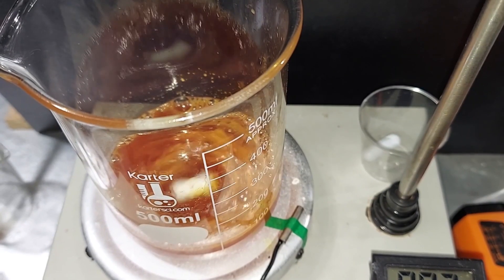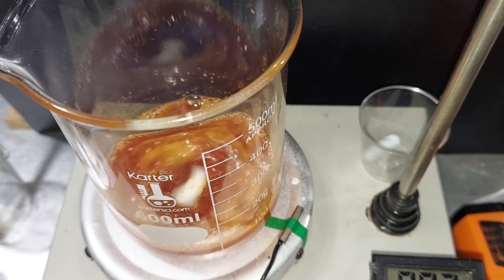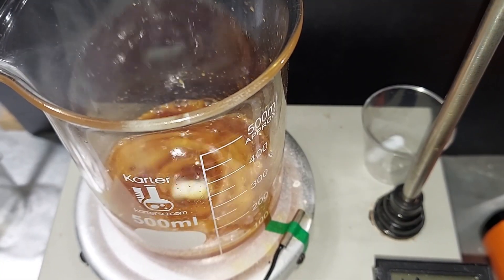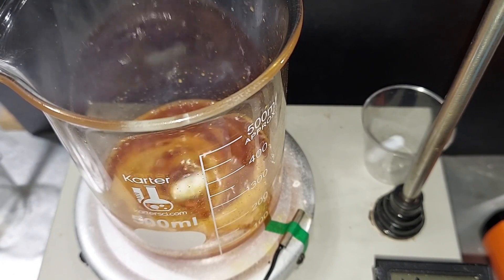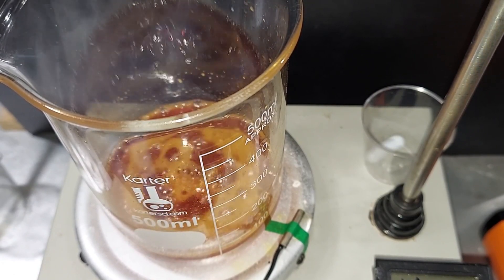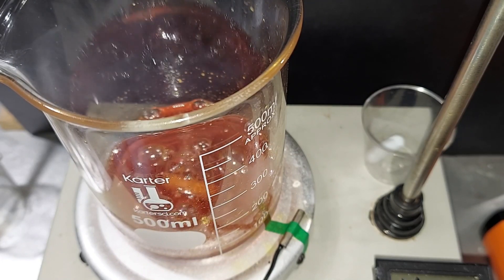Before I turn the temperature up, you can see the color change as picric acid is starting to form. It's been at 120 degrees Celsius for about 20 minutes and everything is dissolved. I'm going to turn down the stirrer and the heat. We're going to let this cool down to close to room temperature and then dump it in some ice water.